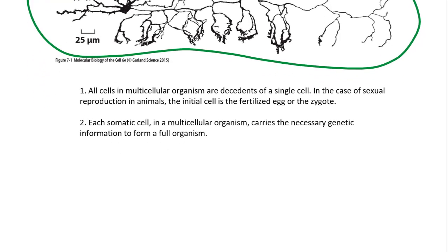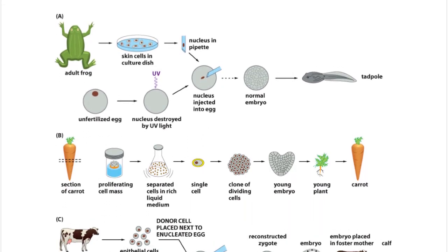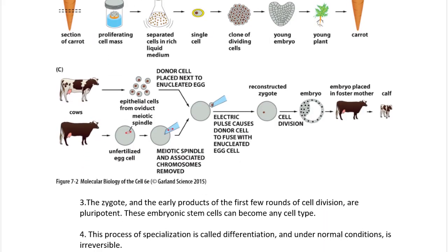All cells in multicellular organisms are descended from a single cell — in sexual reproduction, the fertilized egg or zygote. Each somatic cell carries the necessary genetic information to form a full organism. This is demonstrated by the fact that you can take an adult cell, remove its genetic material, inject it into a fertilized egg after removing that egg's genetic material, and eventually produce an adult organism.